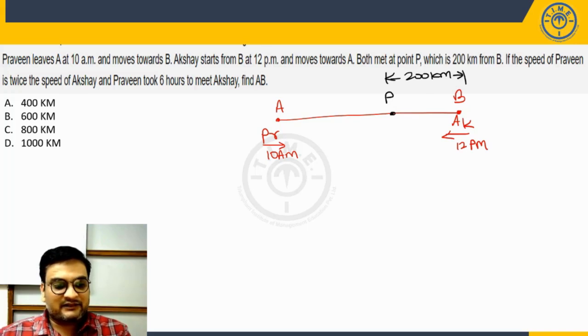If speed of Praveen is twice the speed of Akshay. So speed of Praveen is twice the speed of Akshay and Praveen took 6 hours to meet Akshay. So what would that mean? That would mean the following.